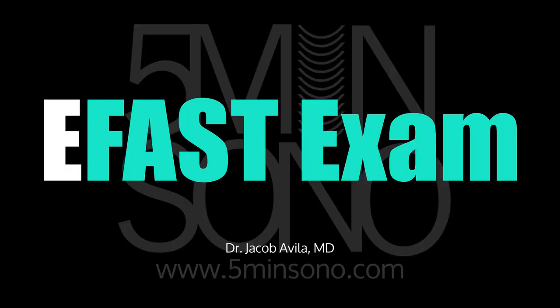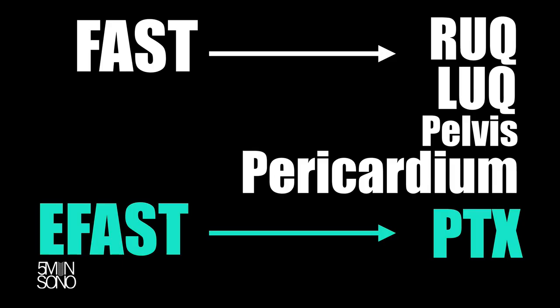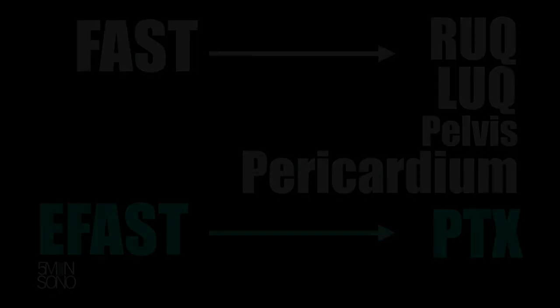Hello, my name is Jacob Avila of 5-Minute Sono, and here we're going to talk about the eFAST examination. The traditional FAST exam includes evaluation of the right upper quadrant, left upper quadrant, and pelvis, looking for hemoperitoneum and hemothorax, and looking at the pericardium for hemopericardium. The eFAST examines all of those things and also includes the evaluation of pneumothorax.